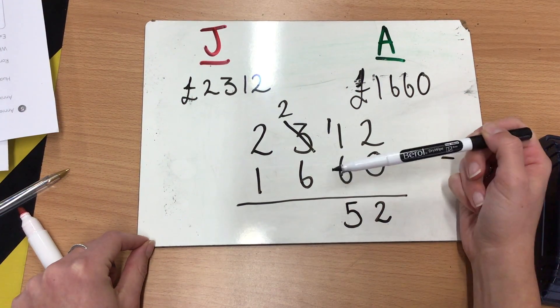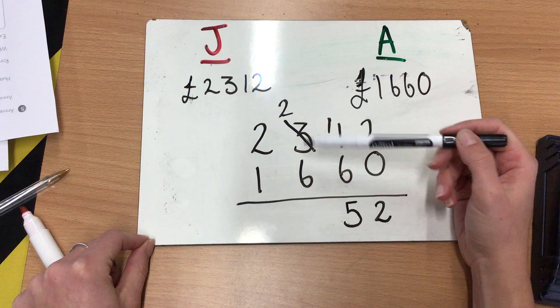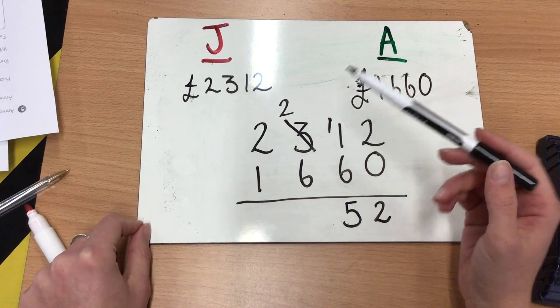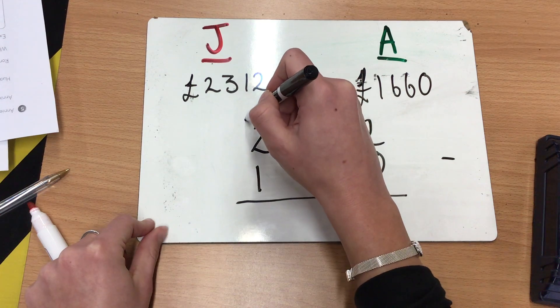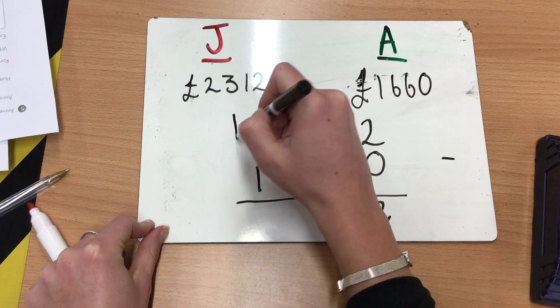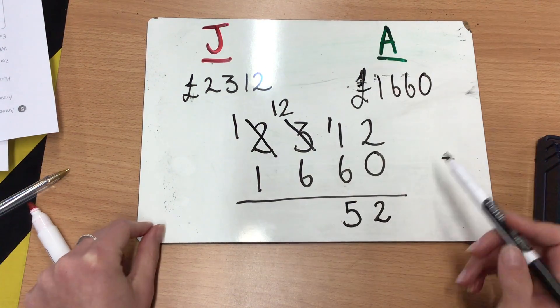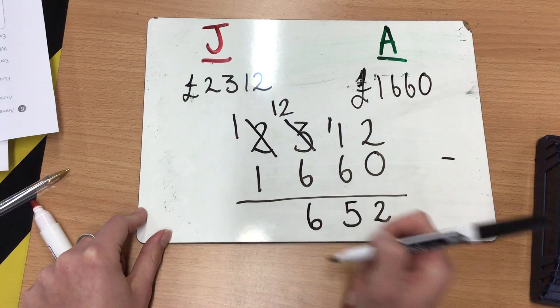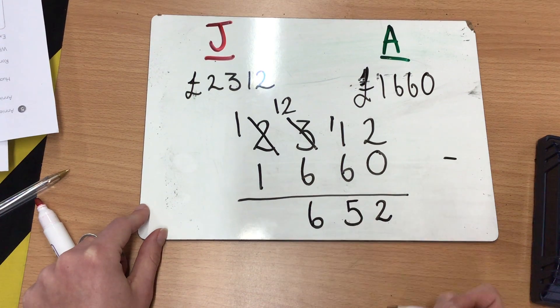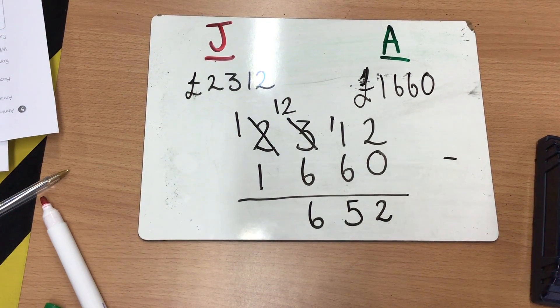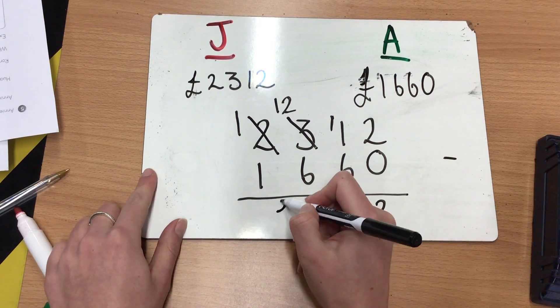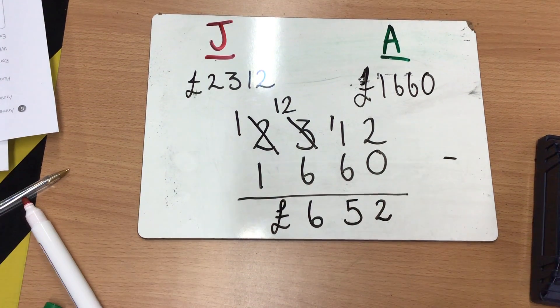Moving over to my 100s, I've got 200 subtract 600. Again, that's going to be quite tricky because I'm going to go into minus numbers if I was to do that. So if I go over to the 1,000s column, rename my 1,000s. So I've got 1,000, pop my 1,000 up here, 12, take away 6, would give me 6. And then I've just got my 1 subtract 1, which would leave me with nothing. So how much more did Jan spend than Adam? She spent an extra £652.